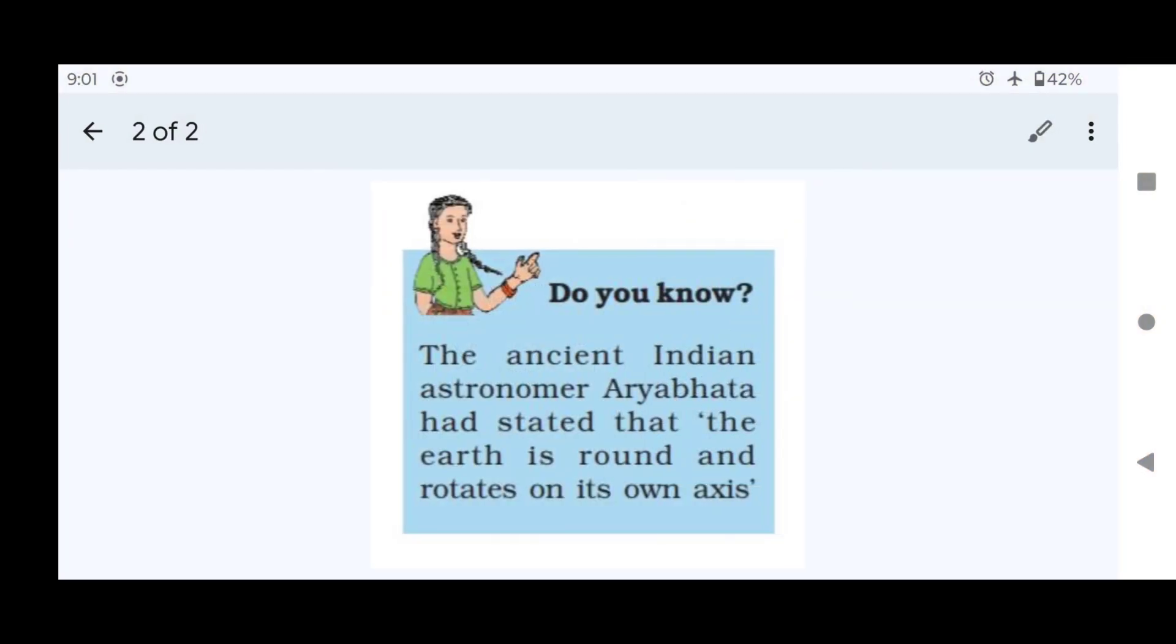Another important fact from NCERT is that the ancient Indian astronomer Aryabhata had stated that the earth is round and it rotates on its own axis. Thank you.